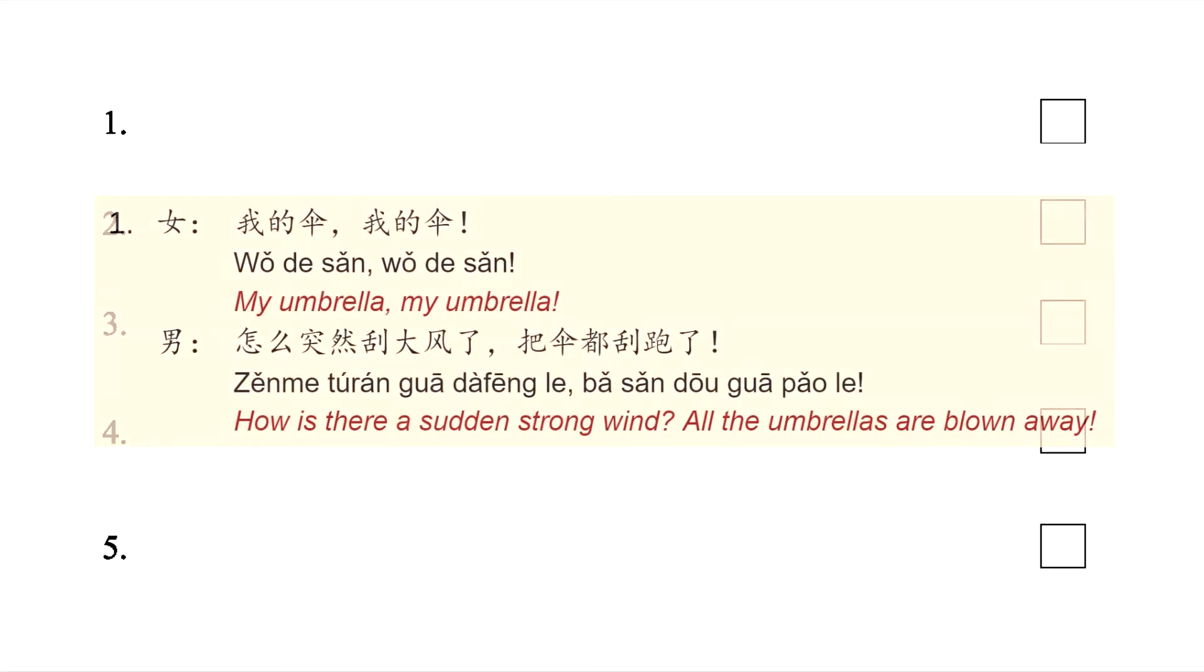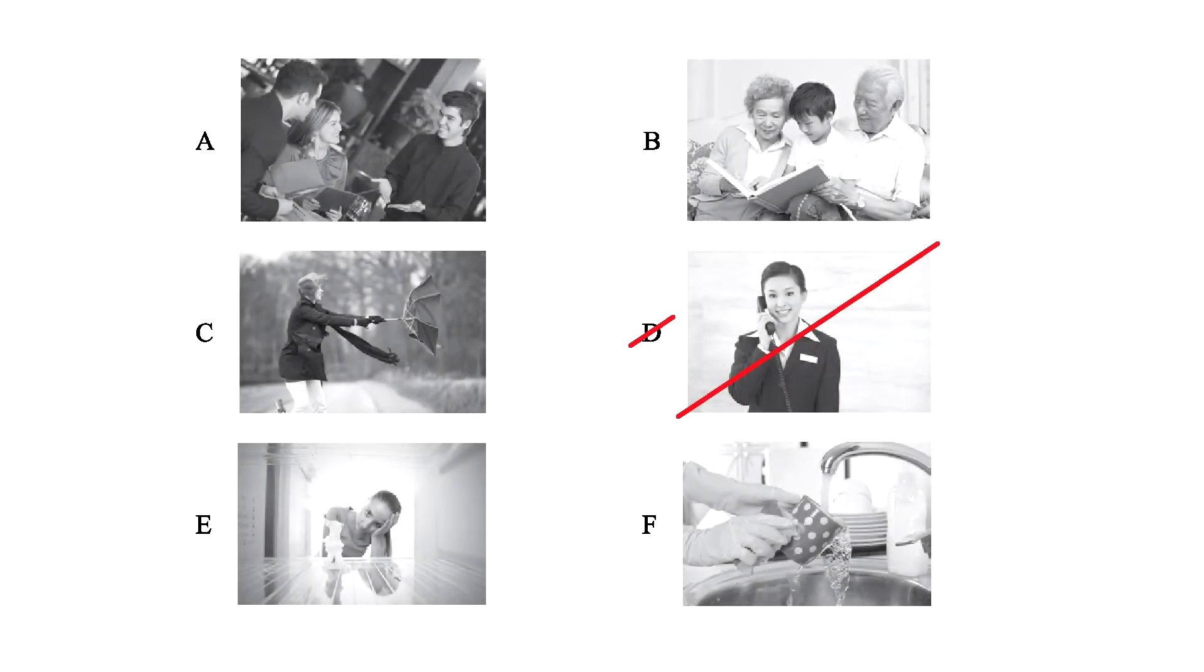In the dialogue, we hear a woman saying 我的伞，我的伞, my umbrella, my umbrella. The man says 怎么突然刮大风了，把伞都刮跑了？ How is there a sudden strong wind? All the umbrellas are blowing away. For this dialogue, we have picture letter C. In the picture, we see a woman with an umbrella, and it seems that she's having trouble with it.